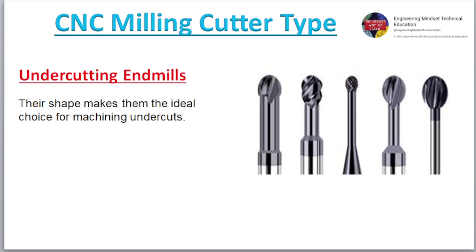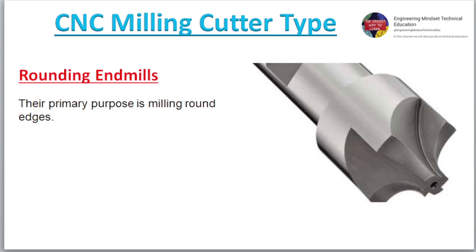Undercutting End Mills. Their shape makes them the ideal choice for machining undercuts. Rounding End Mills. Their primary purpose is milling round edges.